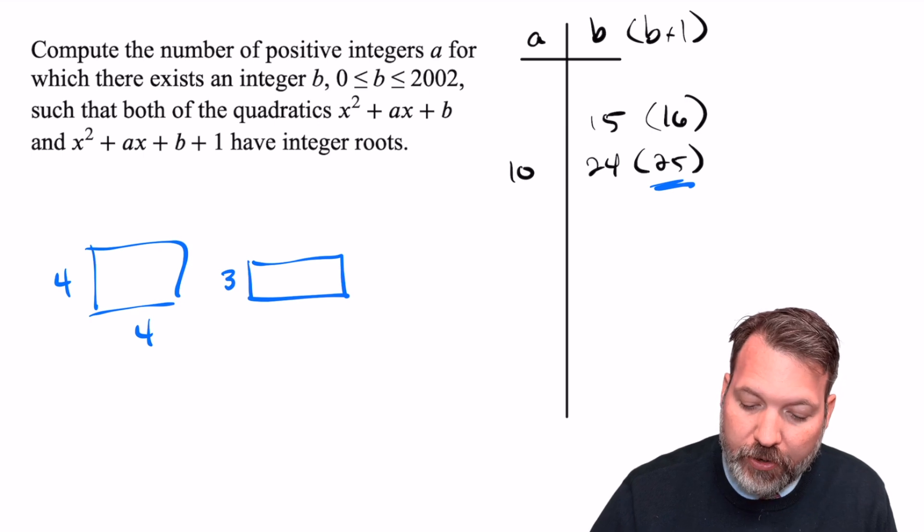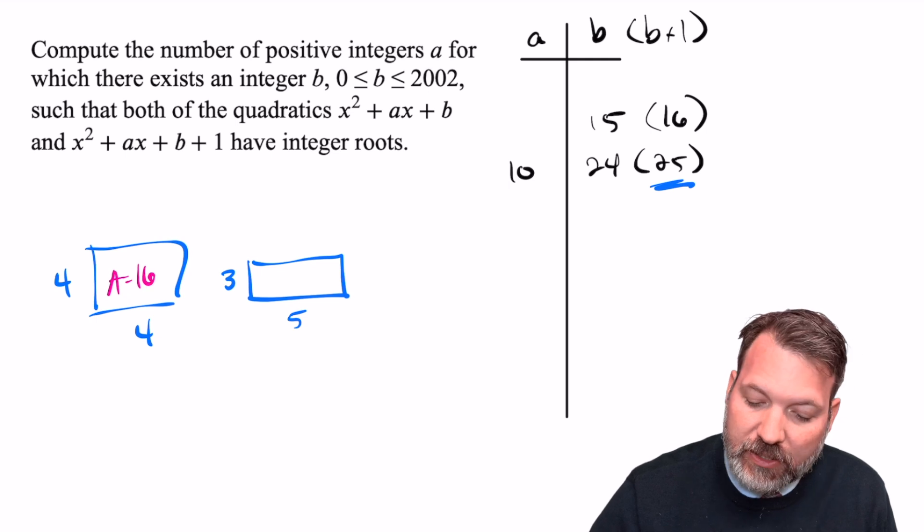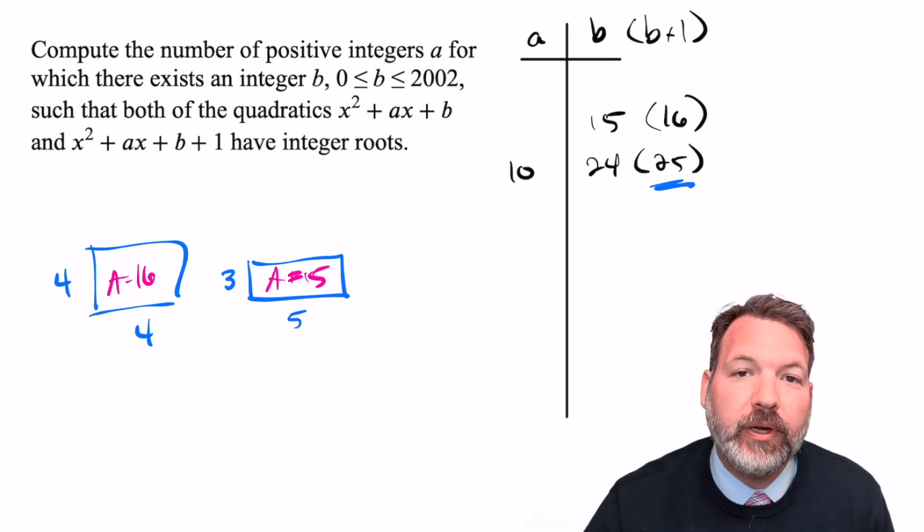If we make that a rectangle, that's just a little bit shorter, three units tall, and a little bit longer, five units long, I can see an area of 16 versus an area of 15. And those are the B and B + 1 values we're looking at in this table.